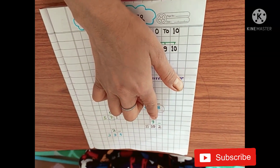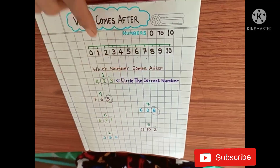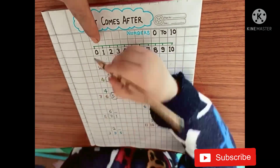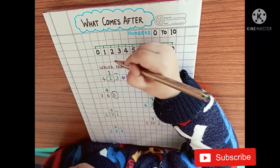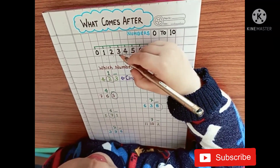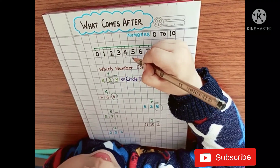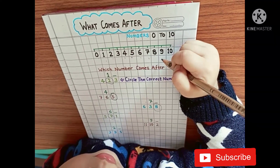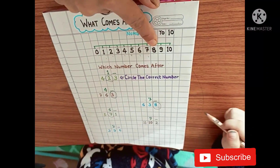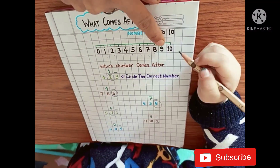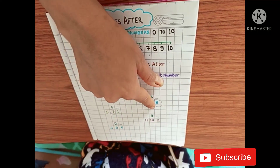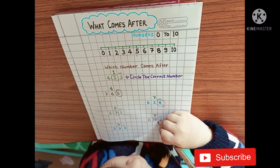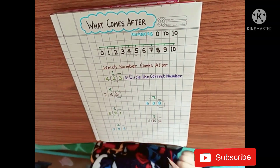Next number is 9. Now you have to read this line first to find the correct number. What comes after 9? 10, 1, 2, 3, 4, 5, 6, 7, 8, 9. What comes after 9? 10. Can you make a circle on number 10? 10. Yes. What comes after 9? 10.